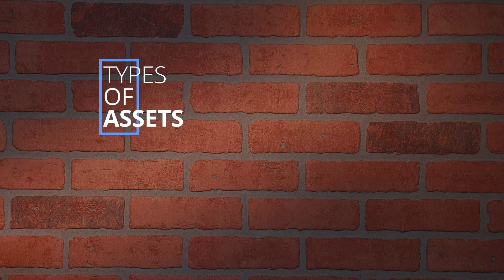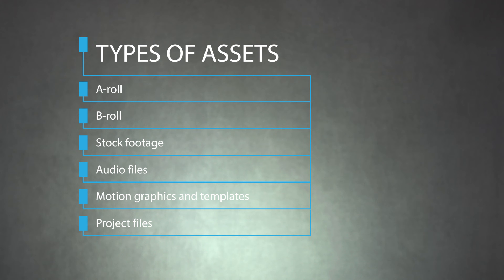Take your time in this initial design phase, but remember that it may take some trial and error to come up with the best organization system. As you design your system, think about all the different types of assets you will be using and how best to categorize them. Then create folders for each type of asset within your main project folder. These can include A-Roll and B-Roll, stock footage, audio files, motion graphics and templates, and project files.